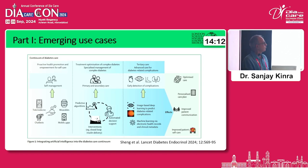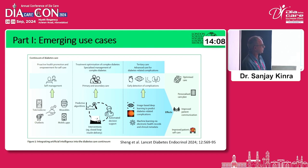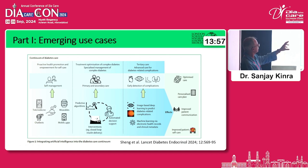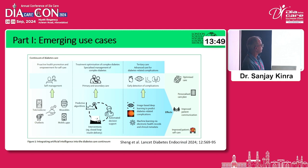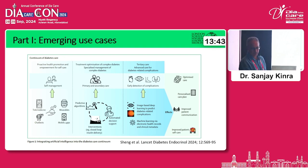This is just a figure from a recent review article in Lancet Diabetes and Endocrinology where they try to map out a whole range of activities going on in this space right now — all the way from the entire continuum of care, from prevention and risk stratification on to primary and secondary care, as well as early protection of complications.